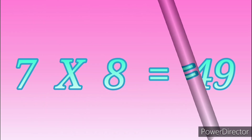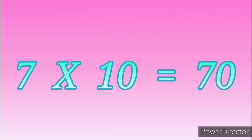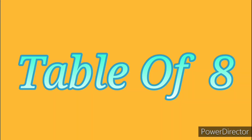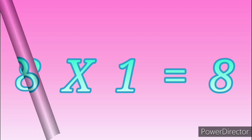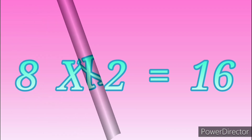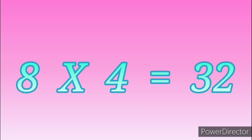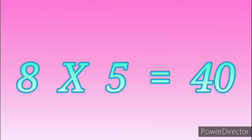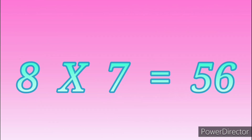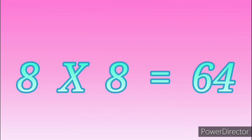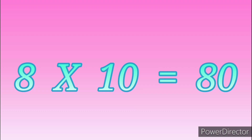Seven sevens are forty-nine. 7 eights are 56. 7 nines are 63. 7 tens are 70. Table of 8. 8 ones are 8. 8 twos are 16. 8 threes are 24. 8 fours are 32. 8 fives are 40. 8 sixes are 48. 8 sevens are 56. 8 eights are 64. 8 nines are 72. 8 tens are 80.